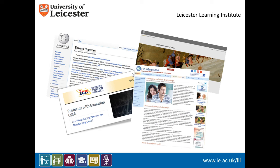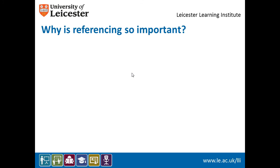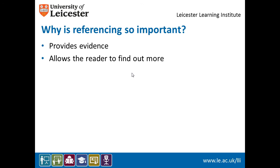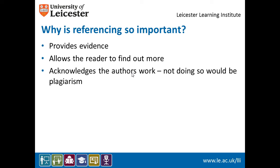In academic writing, we use citations and references to provide evidence for our statements, so the reader, if interested, can find out more. This can also help you keep within a word limit. Importantly, it acknowledges the author of the original work. Not acknowledging another's work is plagiarism.